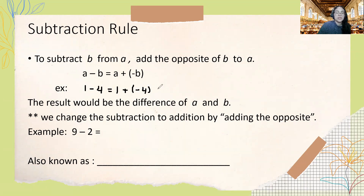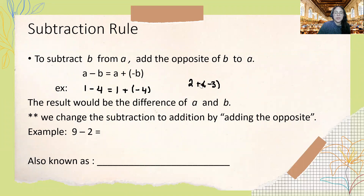We've seen problems like 2 plus negative 3, which we work out on the number line. We'd be at positive 2 and add negative 3, moving to the left by 3 spaces on the number line.